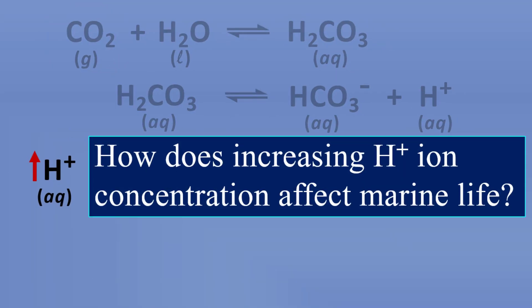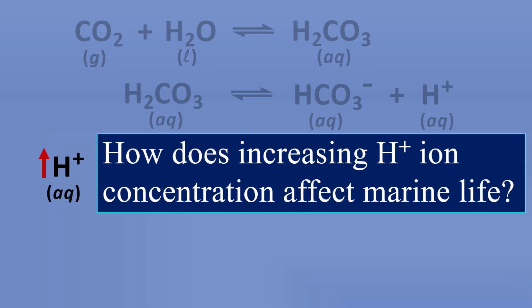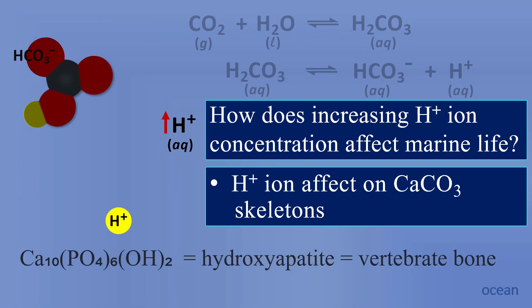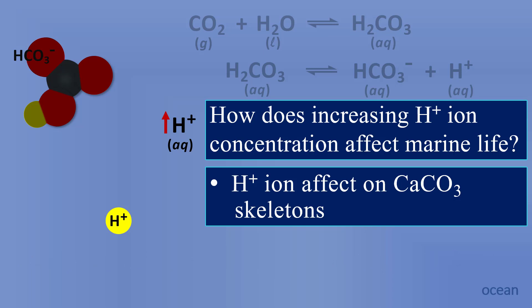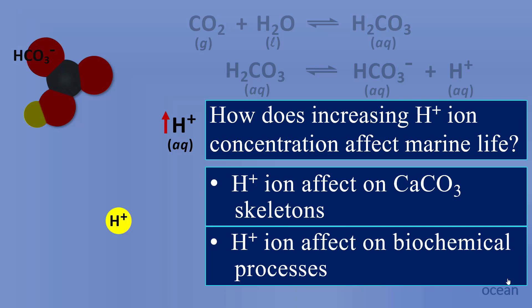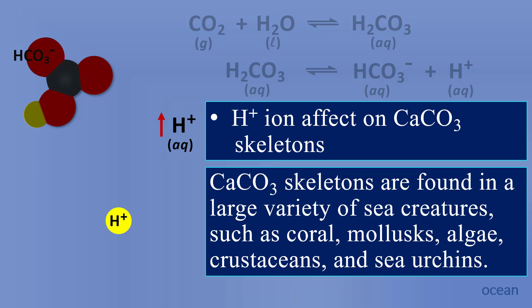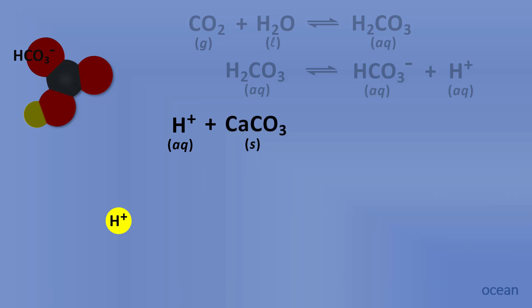So how does increasing hydrogen ion concentration affect marine life? To answer that, we're going to look at hydrogen ion effect on calcium carbonate skeletons. In animal life on Earth, there are two main compounds that make up skeletal structures. For vertebrates it's calcium phosphate, chemically known as hydroxyapatite. The other major skeletal compound, found in marine life, is calcium carbonate, CaCO₃. We will also look at hydrogen ion effects on biochemical processes. Calcium carbonate skeletons are found in a large variety of sea creatures such as coral, mollusks, algae, crustaceans, and sea urchins. So how do hydrogen ions interact with calcium carbonate?